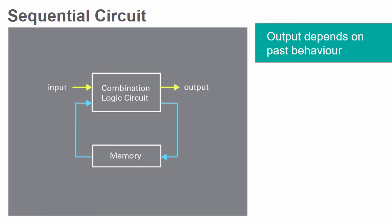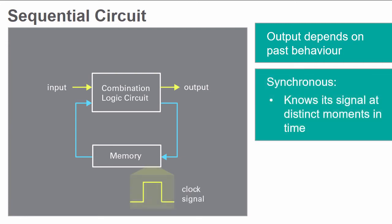There are two main classes of sequential circuits, depending on the timing of their signals. The first is synchronous sequential circuits. Their behavior can be defined knowing its signals at distinct moments in time.